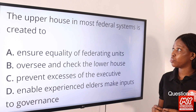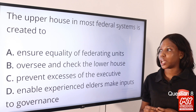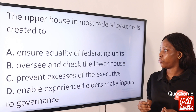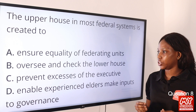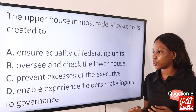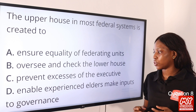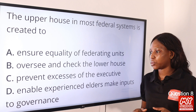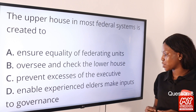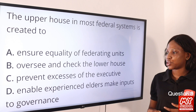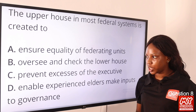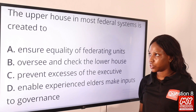Question 8: The upper house in most federal systems is created to — option A, ensure equality of federating units; option B, oversee and check the lower house; option C, prevent excesses of the executive; option D, enable experienced elders make inputs to governance. The answer is option C, prevent excesses of the executive.